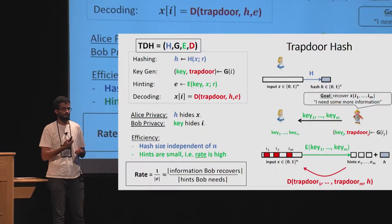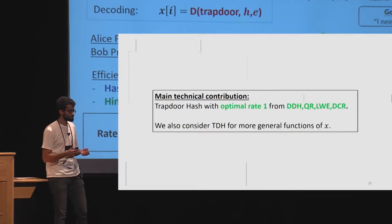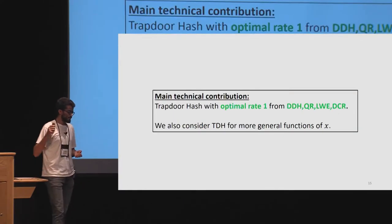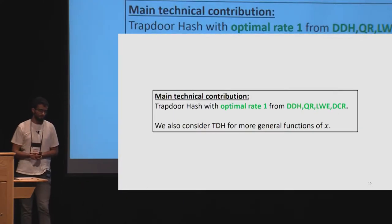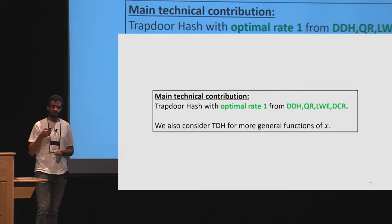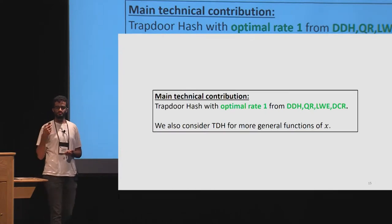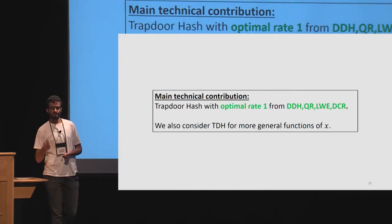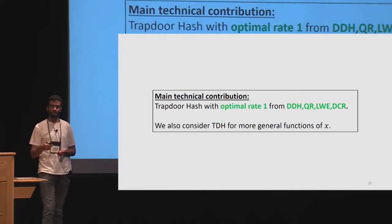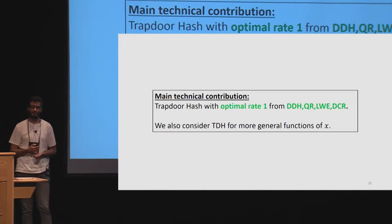To make sense of this rate definition, note that Bob can generate multiple keys to recover multiple bits of the database. The rate is asymptotically equal to the ratio between the information Bob recovers and the total length of hints he needs. The main technical contribution of our paper is constructions for trapdoor hash with optimal rate under the DDH, QR, LWE, and DCR assumptions.